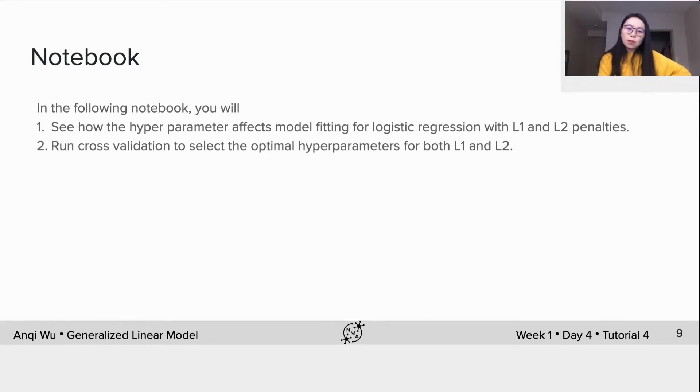So in the following notebook, you will see how the hyperparameter affects model fitting for logistic regression with L1 and L2 penalties. You will run cross-validation to select the optimal hyperparameter beta for both L1 and L2. Hope you all enjoy. Bye, bye!